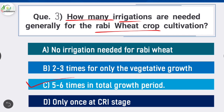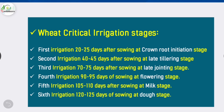Question 3: How many irrigations are needed generally for the rabi wheat crop cultivation? Option C is correct: five to six times in the total growth period. The critical irrigation stages for wheat are: first irrigation at 20 to 25 days after sowing at crown root initiation (CRI) stage; second irrigation at 40 to 45 days after sowing at late tillering stage; third irrigation at 70 to 75 days after sowing at jointing stage; fifth irrigation at 105 to 110 days after sowing at milk stage; and sixth irrigation at 120 to 125 days after sowing.